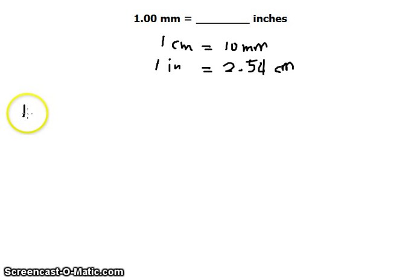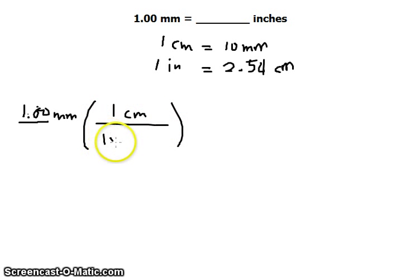We start with 1.00 millimeters. First, we notice that we have 3 significant figures from our given, and our answer would also be in that number of significant figures. We multiply that by the first conversion factor: 1 centimeter equals 10 millimeters.